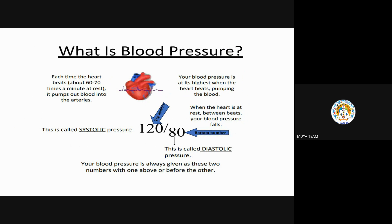To understand blood pressure, consider the normal cycle of the heart. The heart beats 60 to 70 times per minute, pumping blood into the arteries and veins. Your blood pressure is at its highest when the heart beats and pumps blood.